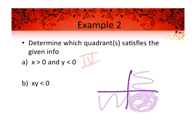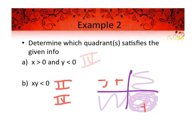Part B says x times y is less than zero. That's a product, and a product that's negative means one value is negative and one is positive. In quadrant two, x is negative and y is positive; in quadrant four, x is positive and y is negative. So the answer is quadrant two or quadrant four — notice the direction says 'quadrant or quadrants,' so it can be more than one.